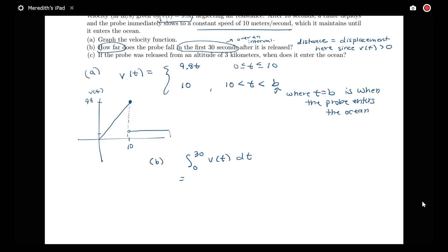So notice to integrate my velocity function, because it's piecewise, I'd have to split this integral up into the integral from 0 to 10 of 9.8t dt, plus the integral from 10 to 30 of 10 dt here. So the integral from 0 to 10 of 9.8t would be 9.8t squared over 2 evaluated from 0 to 10. And then I'd have 10t here evaluated from 10 to 30.